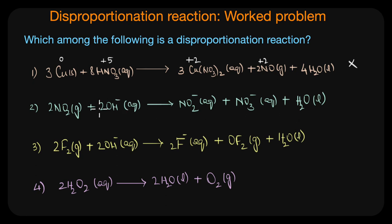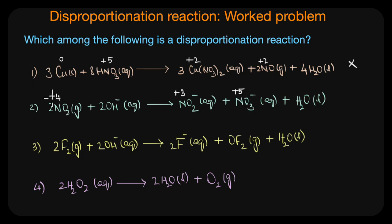The next reaction is: 2NO2 + 2OH⁻ → NO2⁻ + NO3⁻ + H2O. This is indeed a disproportionation reaction. Nitrogen in NO2 is in the plus four oxidation state and disproportionates into NO2⁻ where nitrogen is plus three, and NO3⁻ where nitrogen is plus five. From plus four to plus three it undergoes reduction, and from plus four to plus five it is oxidized. So NO2 undergoes disproportionation in alkaline medium.